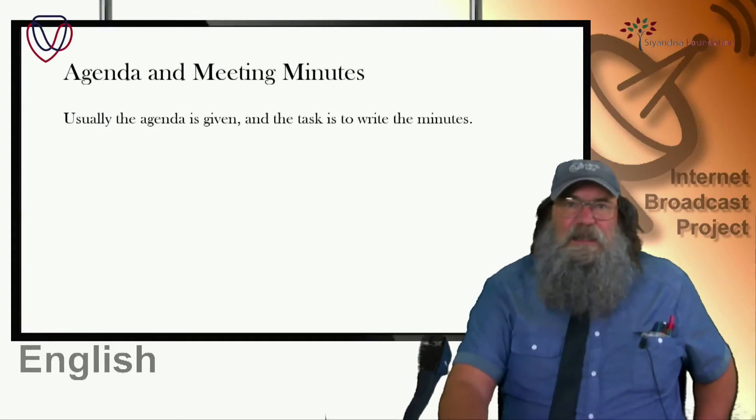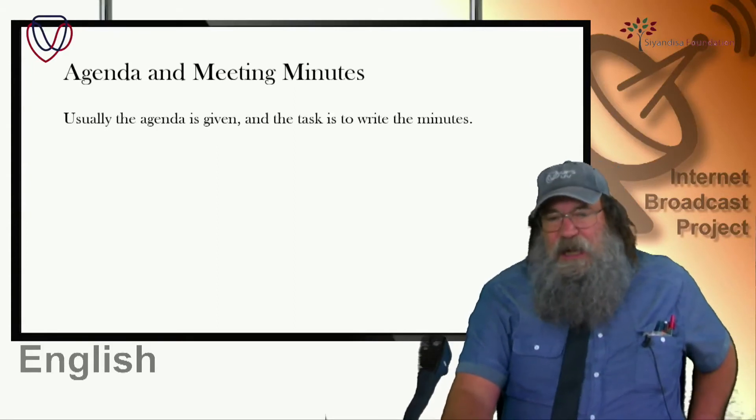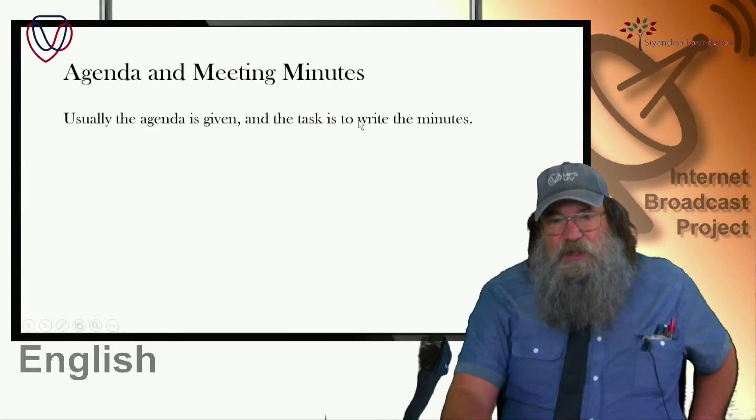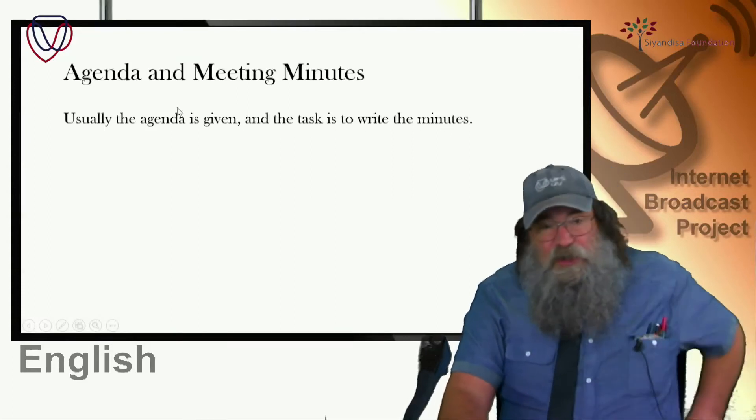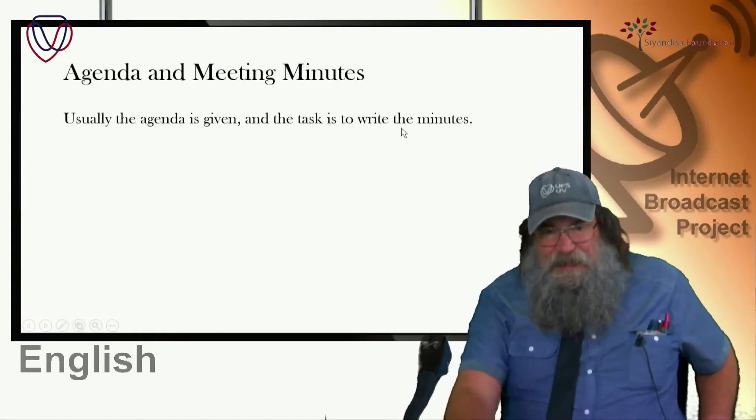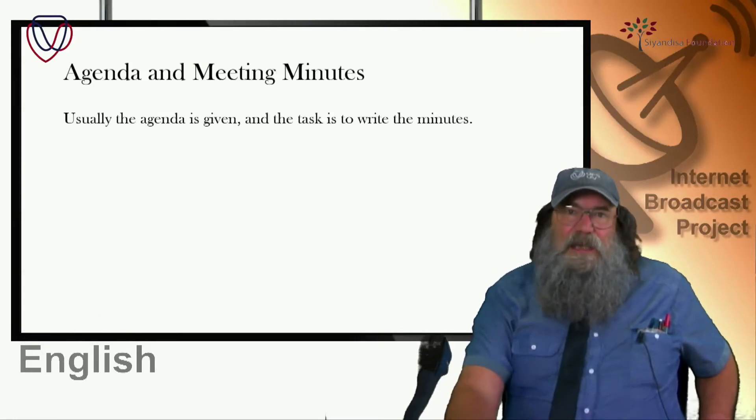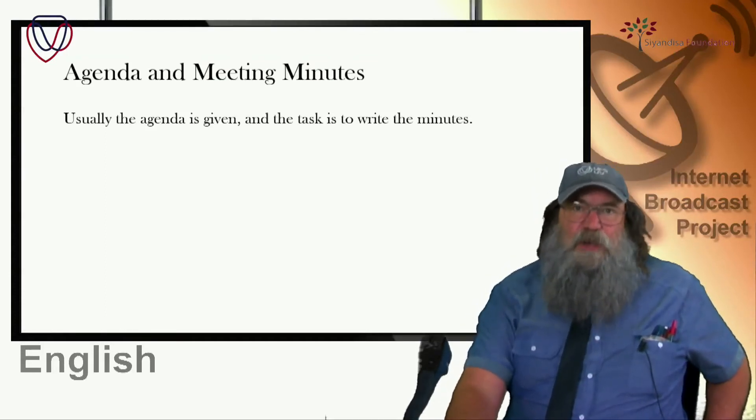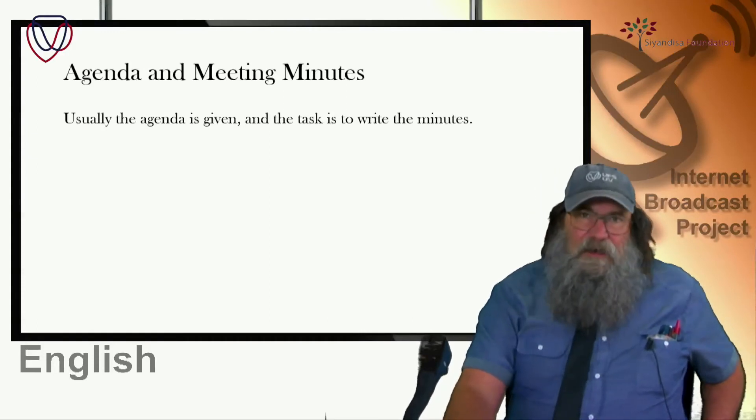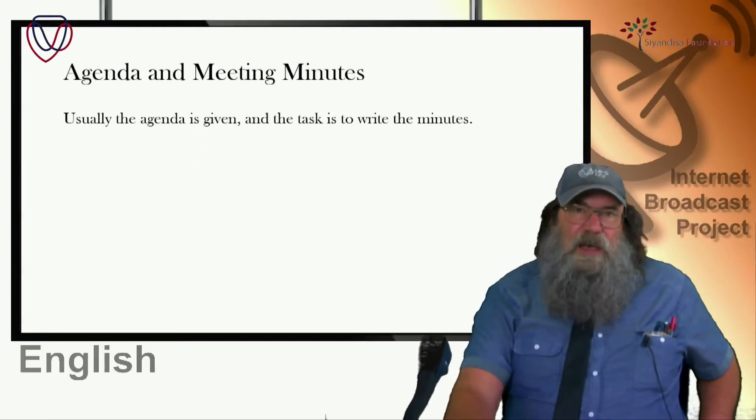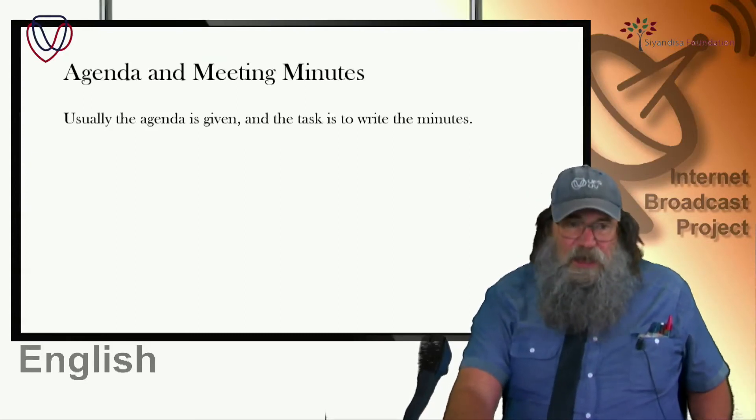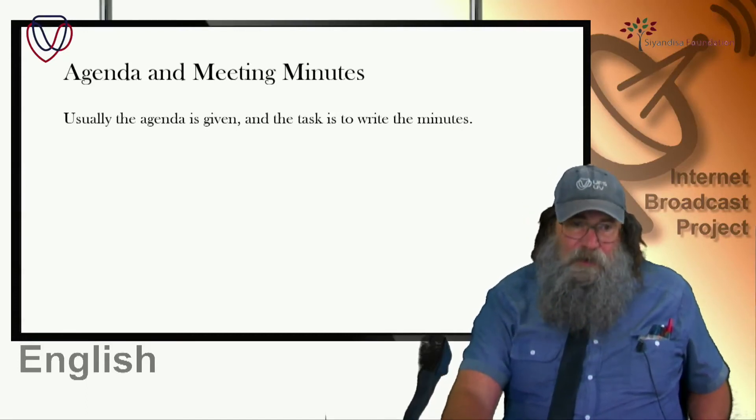Now, agenda and meeting minutes. Fairly straightforward, this. Quite an easy one, if you've learned it. And I've seen some excellent results coming from a question set on this. Usually, they will give the agenda and then your task is to write the minutes. And it's quite easy because you take the items in the agenda as headings for the minutes. And then you just fill in what happened underneath that. Always written in the third person. He did this. She said that. He produced this evidence. She agreed to carry out the task. Never I. Even when referring to yourself, you will refer to yourself by your title and name. It's very formal.